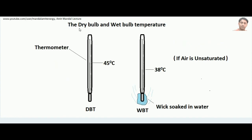Now we will understand the concept of dry bulb and wet bulb temperature. This is a simple mercury-based thermometer. The bulb of the thermometer is where mercury is contained. When we measure the temperature of air without making any modification to this thermometer, that is called dry bulb temperature — simply measuring the temperature of air without any modification.